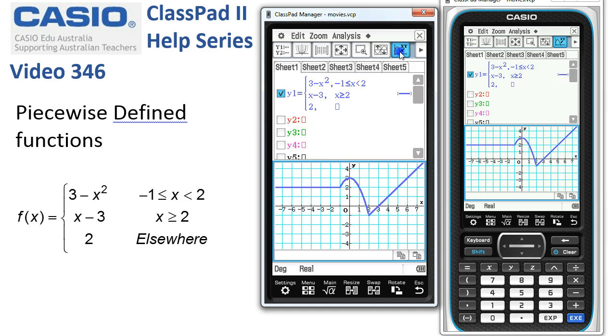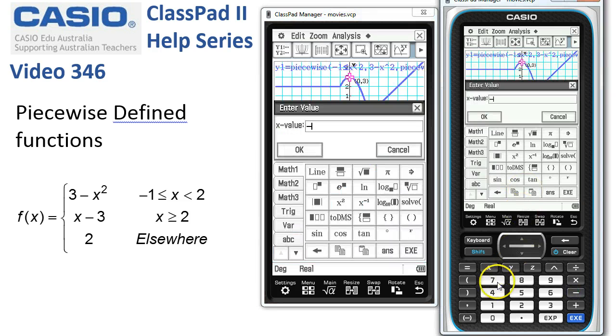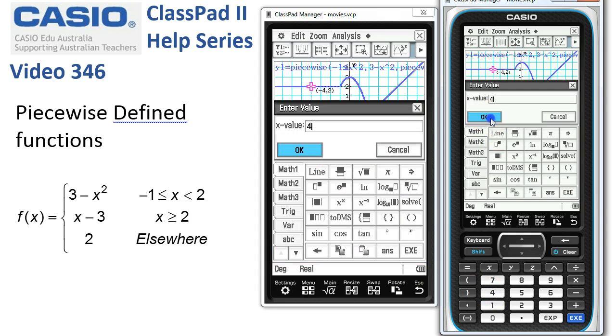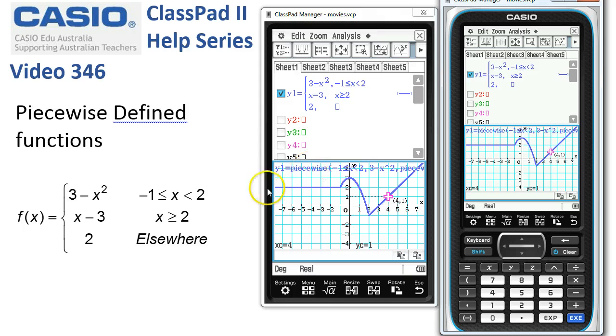Now we can trace along this. Here we go. If I start with tracing we could jump to negative 4. I'll just type in negative 4 and OK.